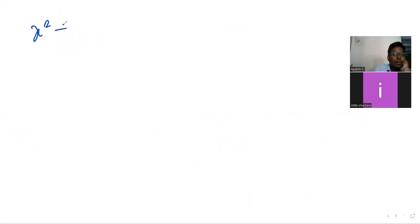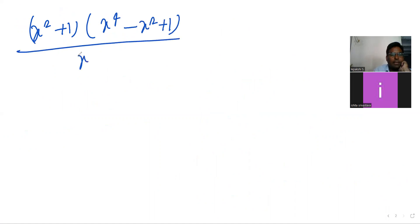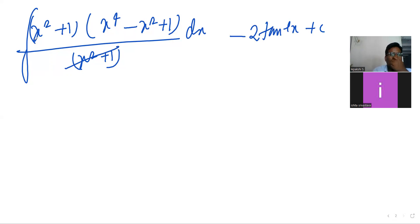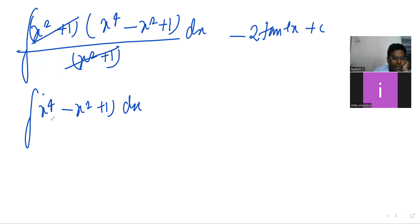Applying the formula, it becomes integration of (x² + 1)(x⁴ - x² + 1) divided by (x² + 1), into dx. The other part we already have the answer for, that is minus 2 tan inverse of x plus c. Now (x² + 1) in numerator and denominator will get cancelled, so remaining is (x⁴ - x² + 1) dx minus 2 tan inverse of x plus c.